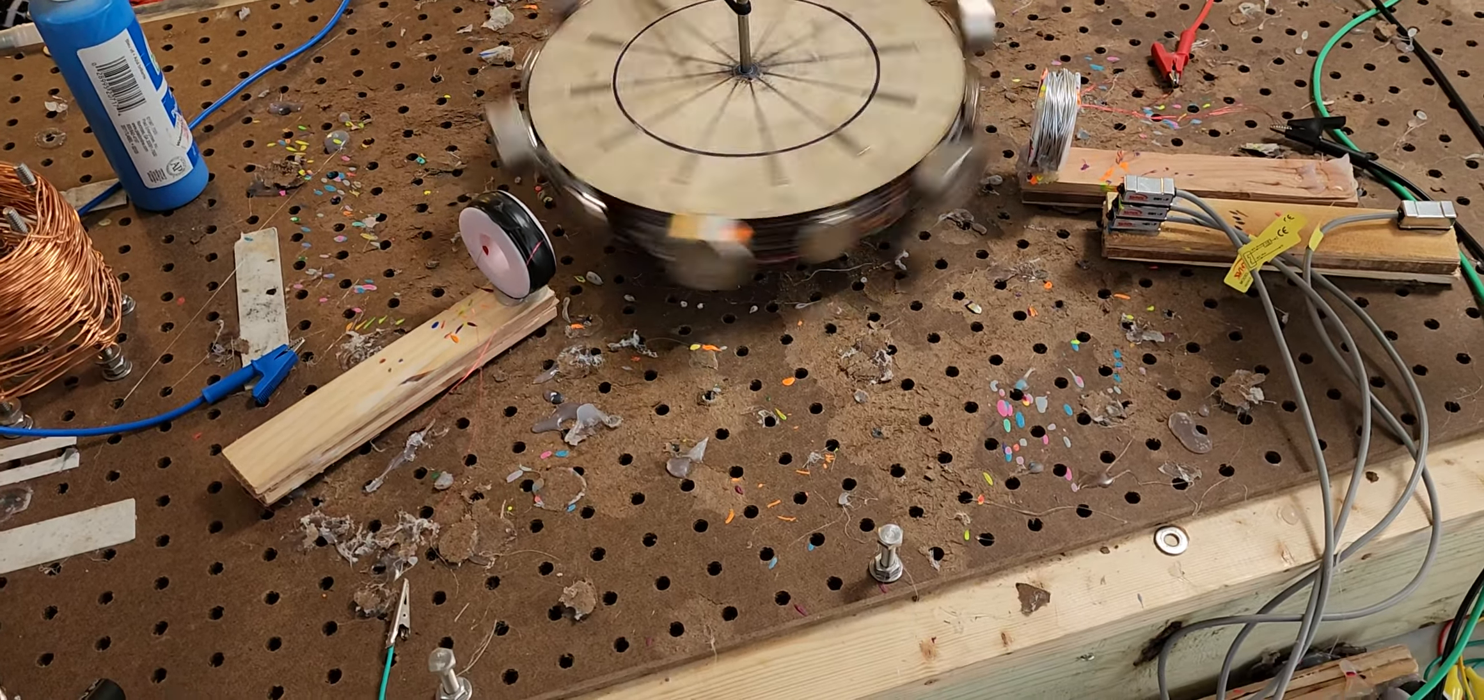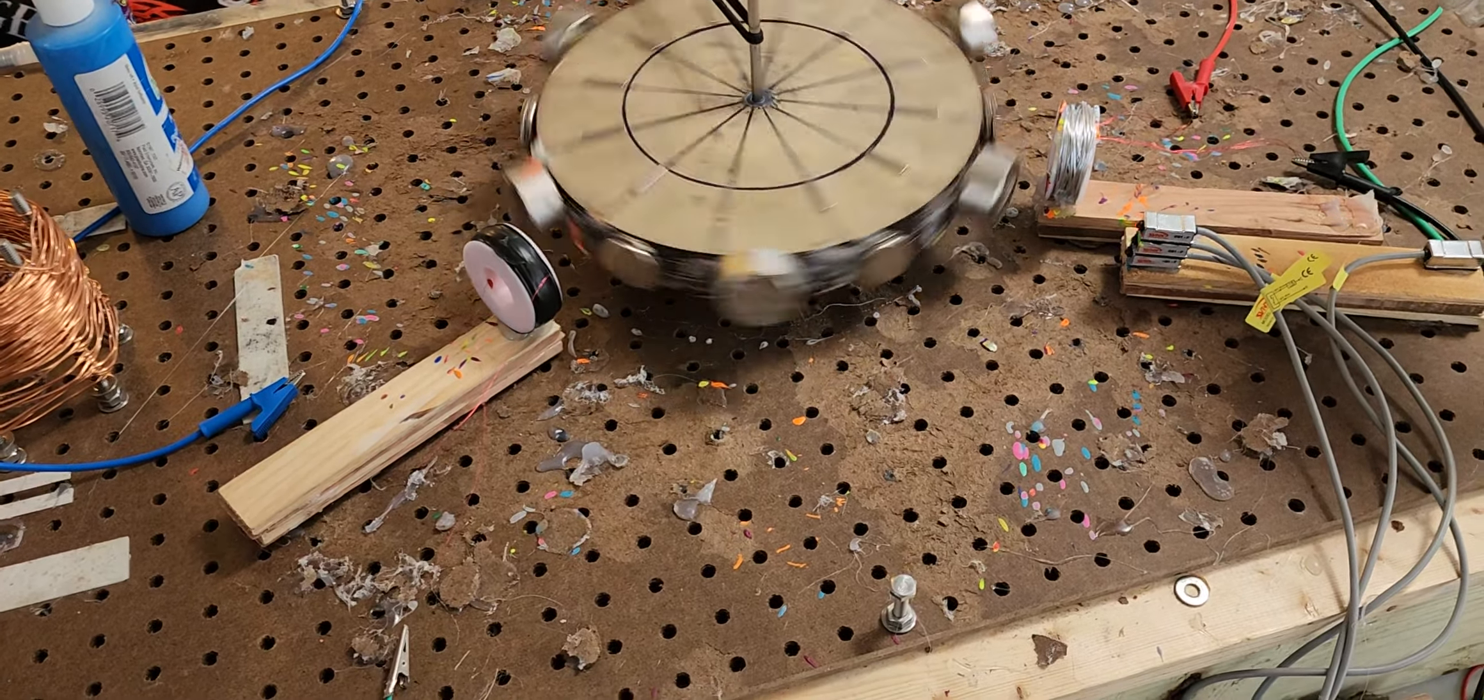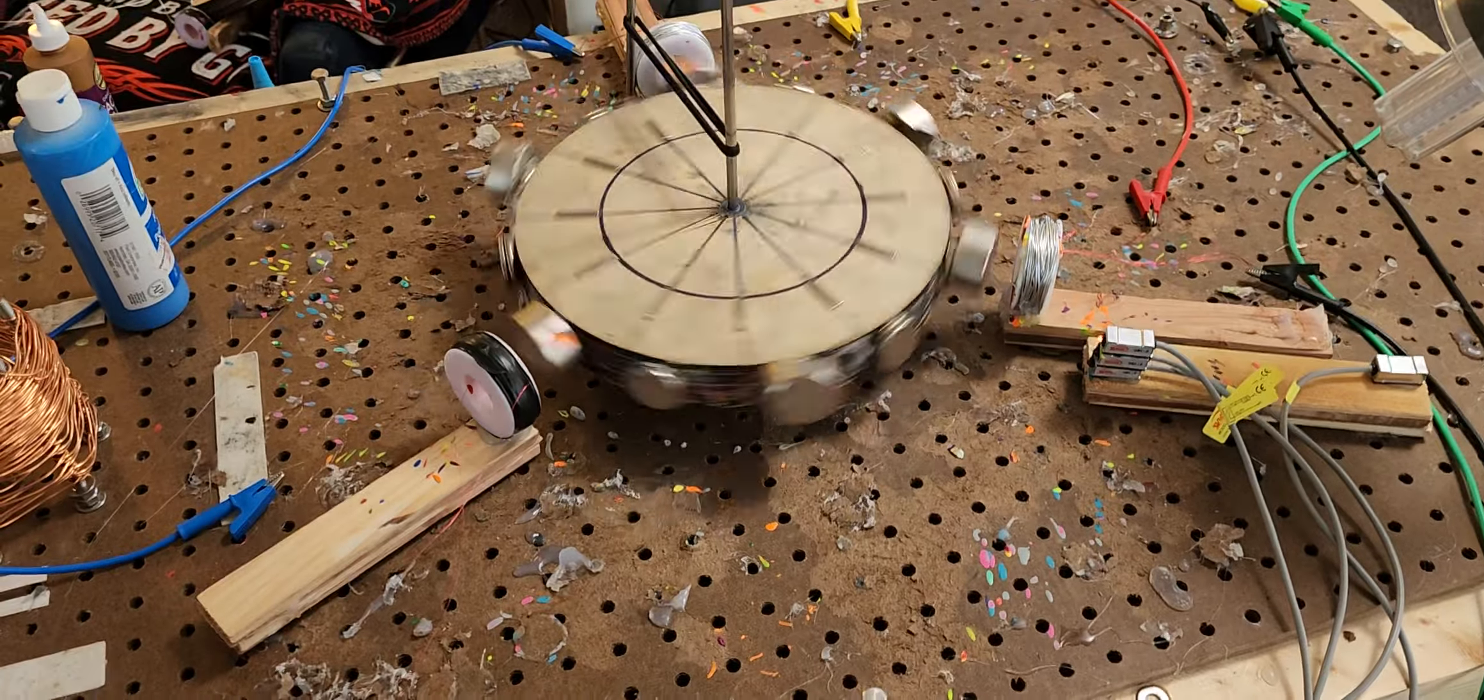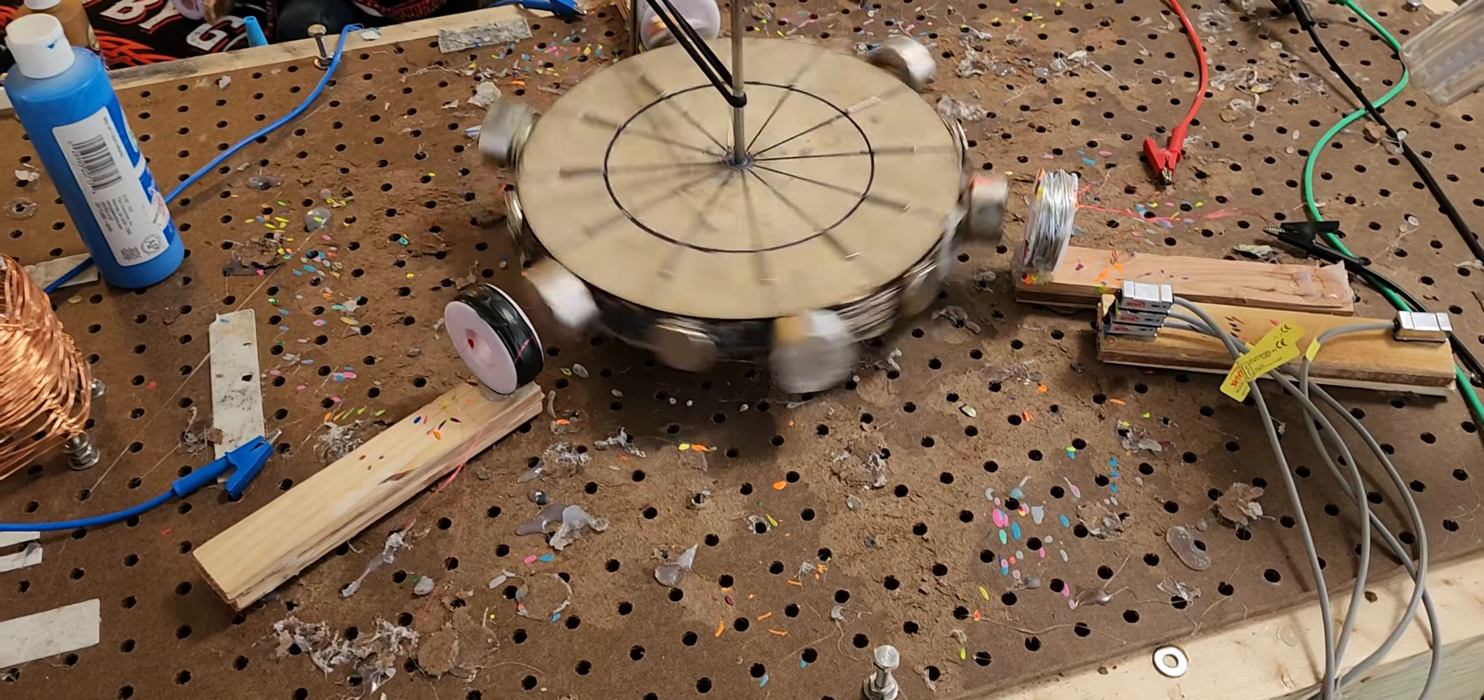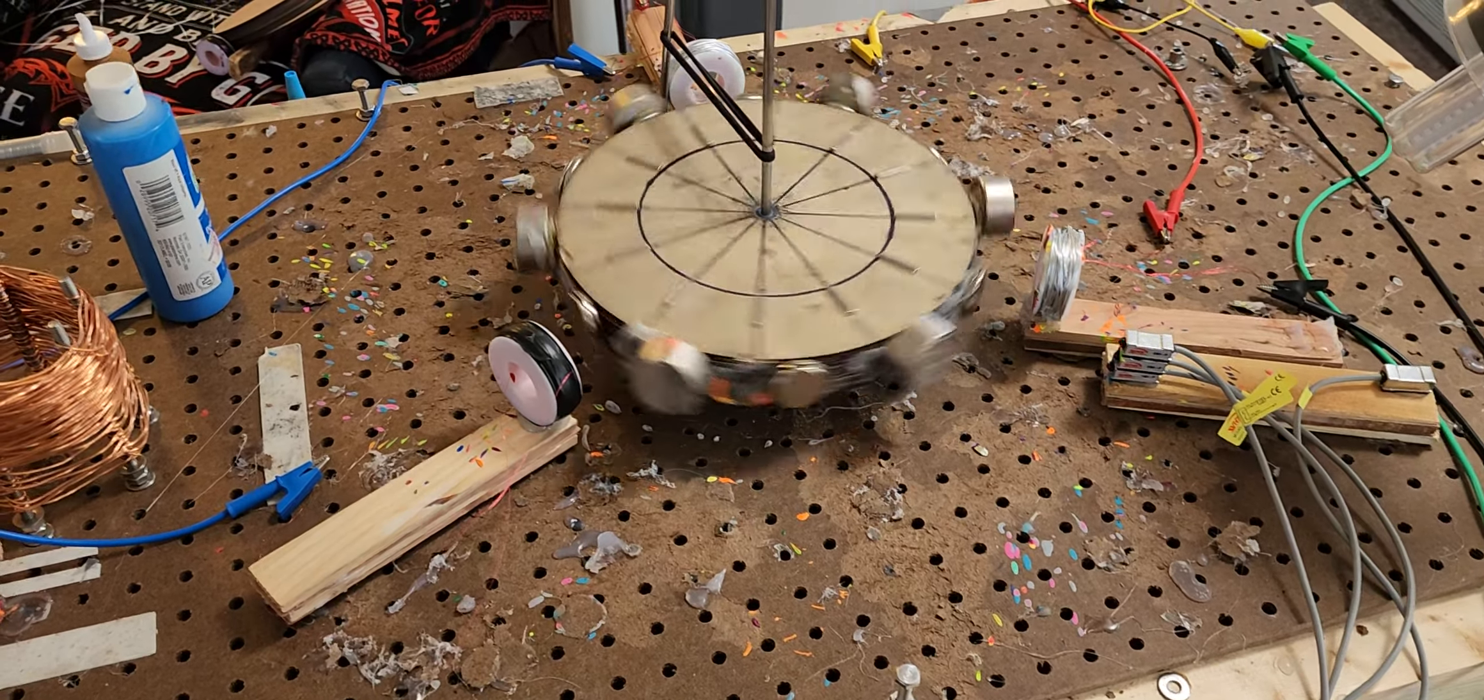So when I make the other rotor, I'm gonna put nine magnets on it instead of just six, because apparently you get a lot better generation of electricity with more magnets. I knew that already, just because you get more passes per revolution.